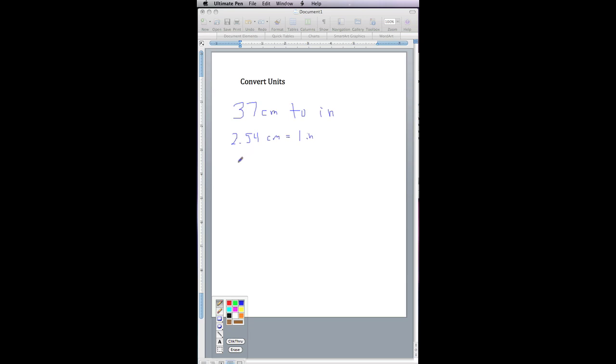So now we know that leads to two conversion ratios. We can write down the number that was given, the 37 centimeters, and multiply that by the conversion ratio that will let the centimeters cancel. So that would be 1 inch over 2.54 centimeters.